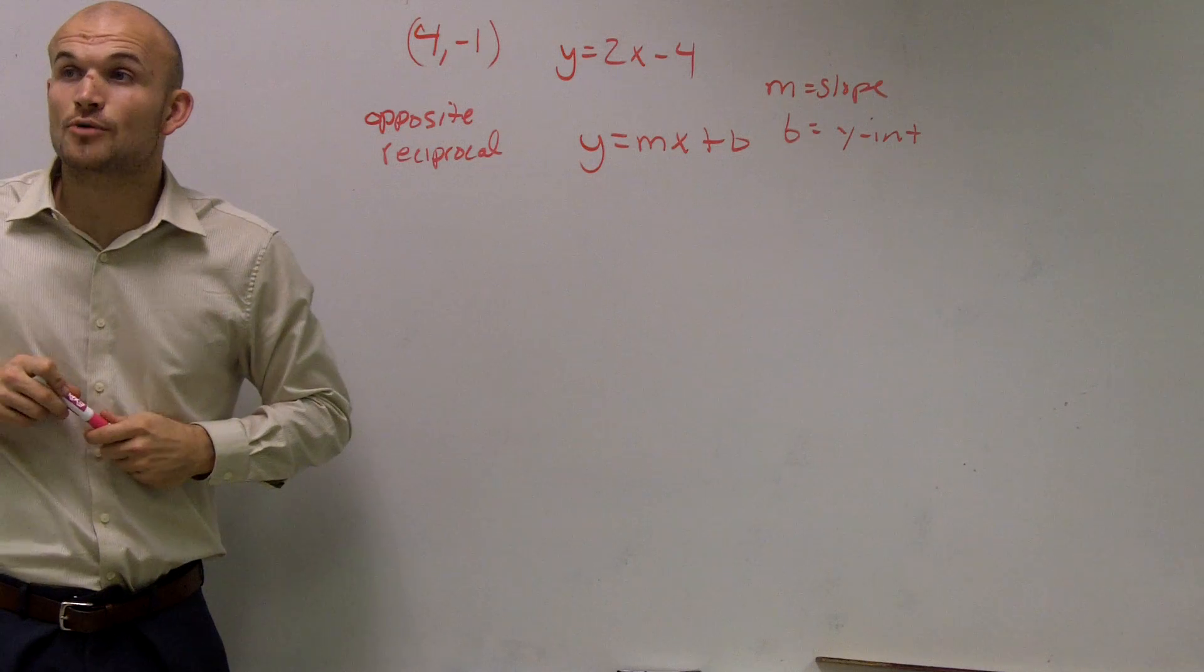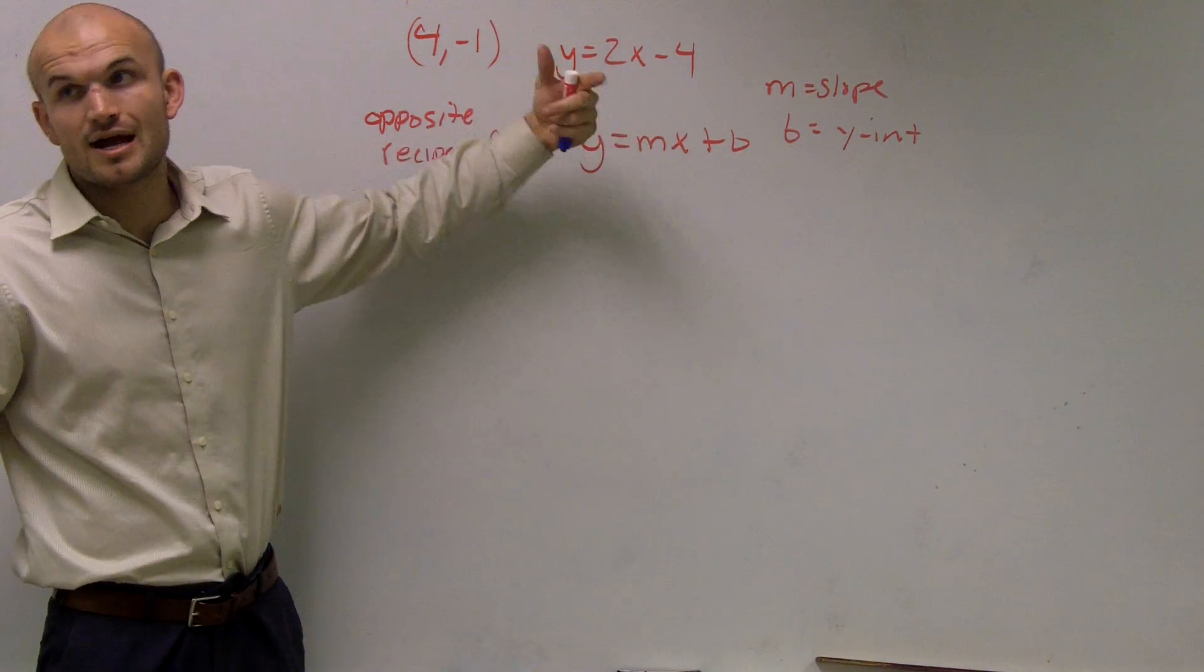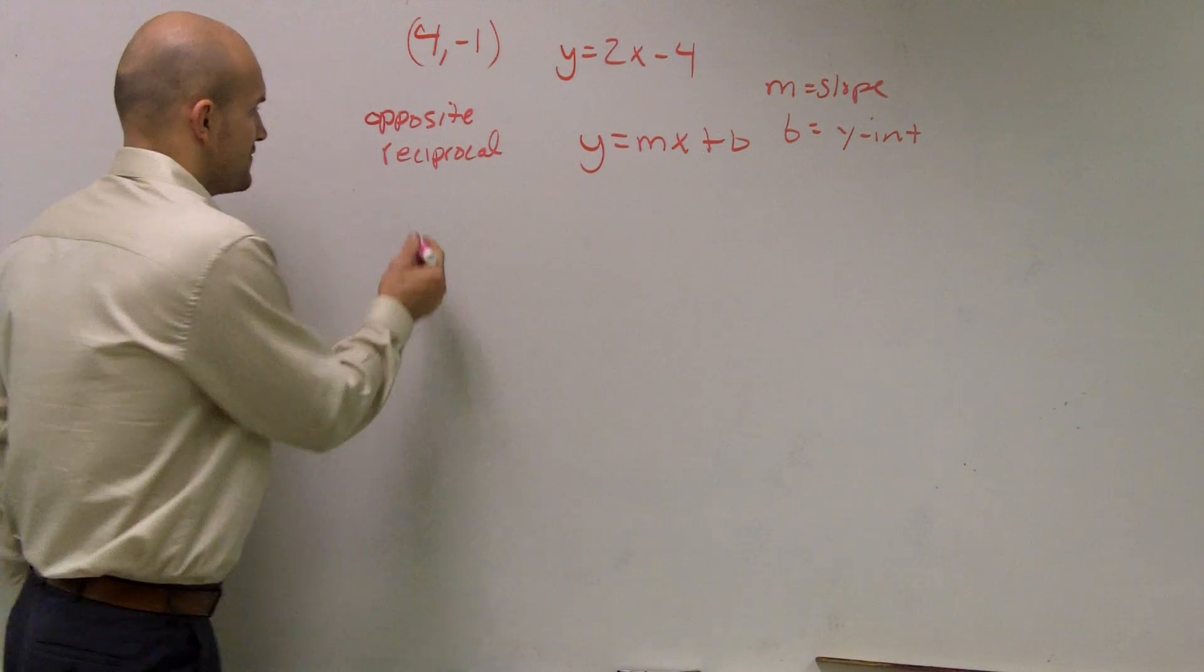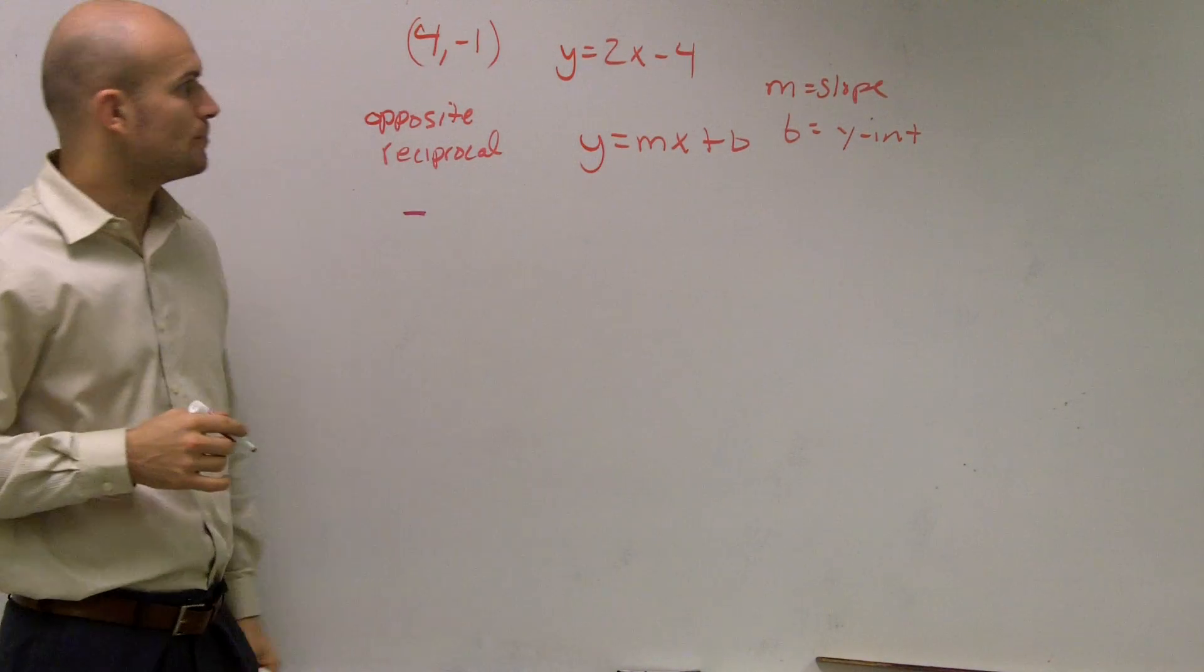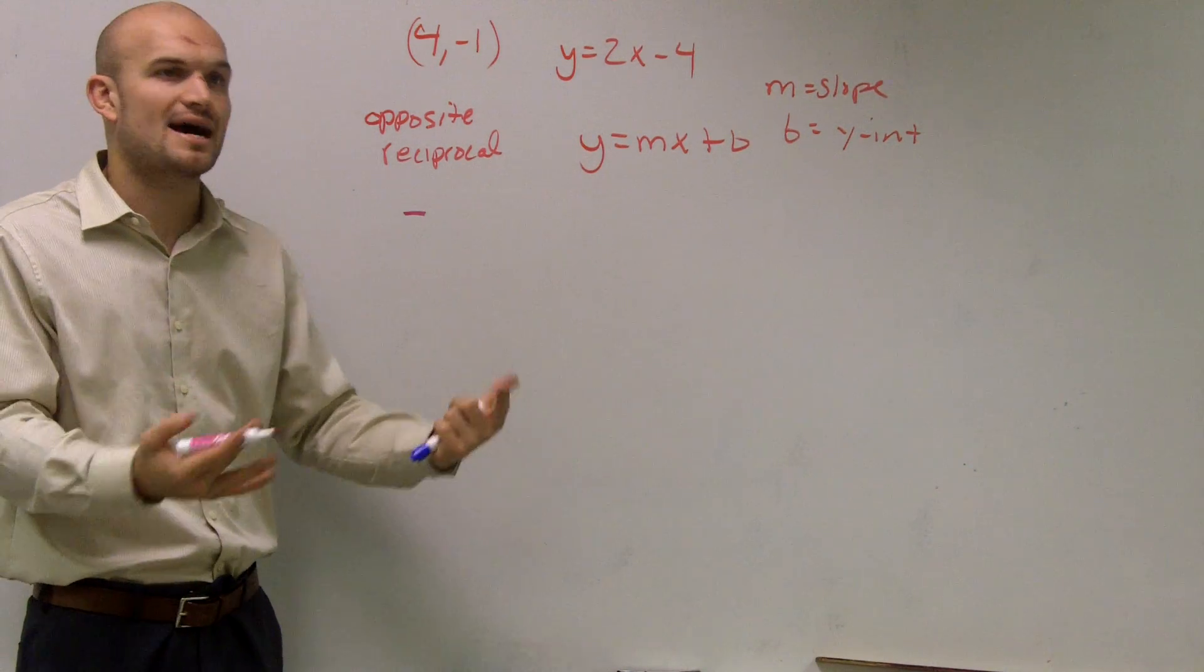Your opposite slope is going to be either negative or positive. If your original slope is positive, I'm talking about the opposite sign, so therefore my new slope is going to be negative. If my original slope was negative, then my new slope would be positive. It's the opposite sign.